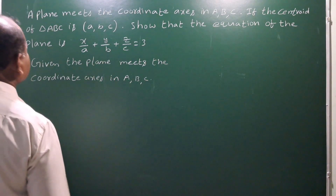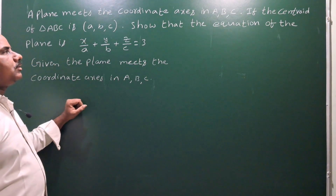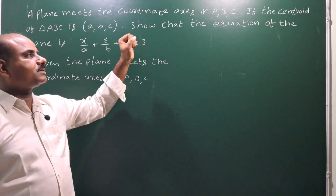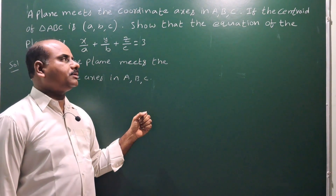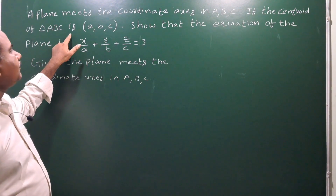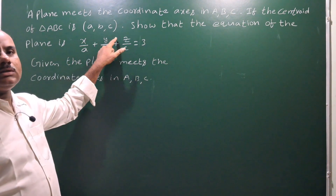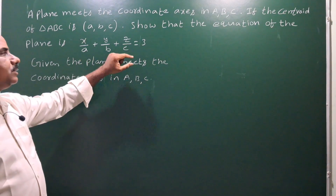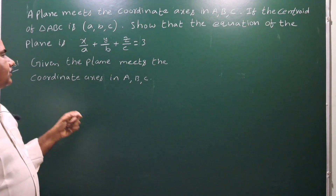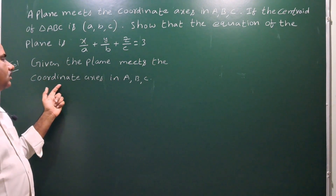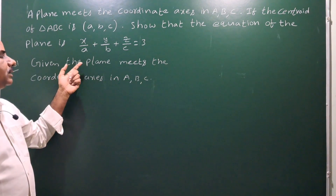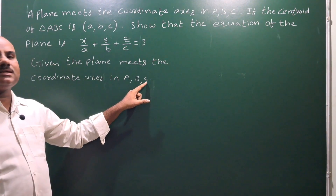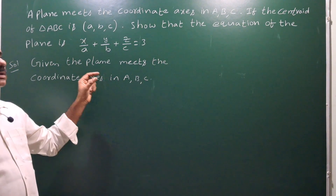Next problem: a plane meets the coordinate axes in A, B, C — three points. If the centroid of triangle ABC is (a, b, c), show that the equation of the plane is x/a + y/b + z/c = 3. Given: the plane meets the x-axis at A, y-axis at B, and z-axis at C.